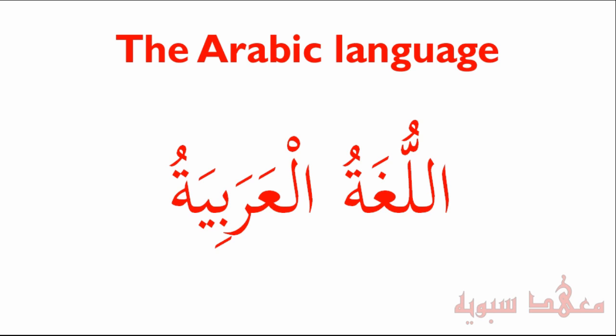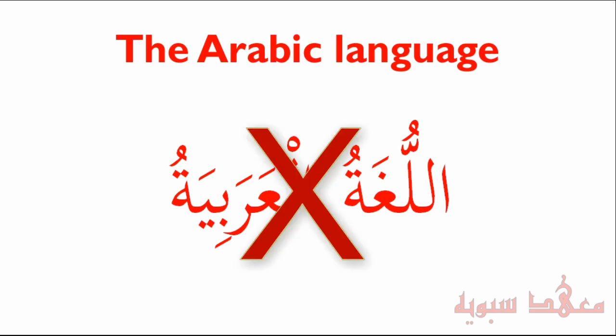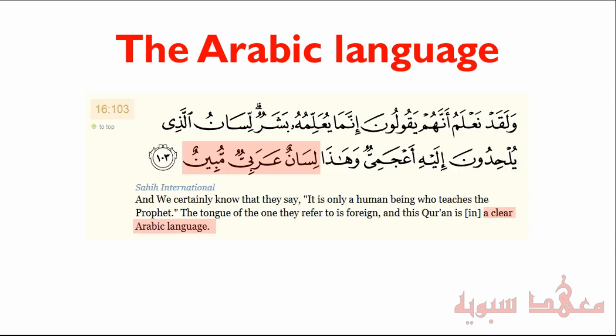An interesting point about this is that the Quran doesn't use this construction. If we look to the Quran, what does it say when speaking about itself? Allah سبحانه وتعالى says: وَهَذَا لِسَانٌ عَرَبِيٌّ مُبِينٌ — so it uses the word لِسَان.